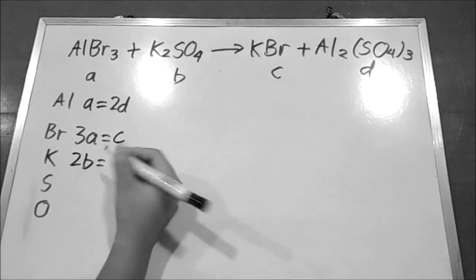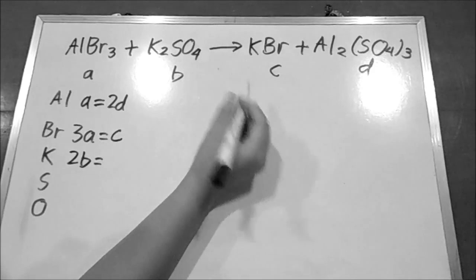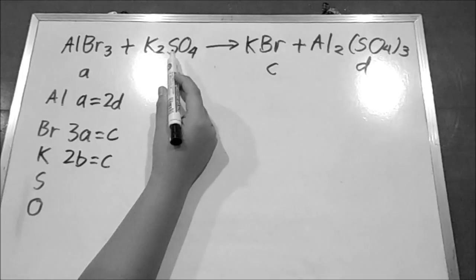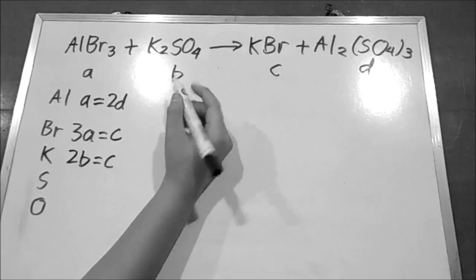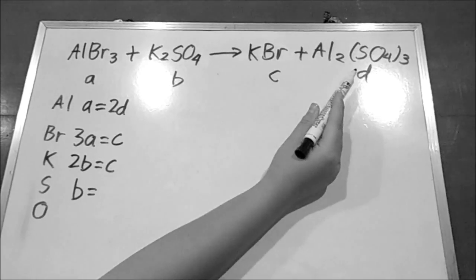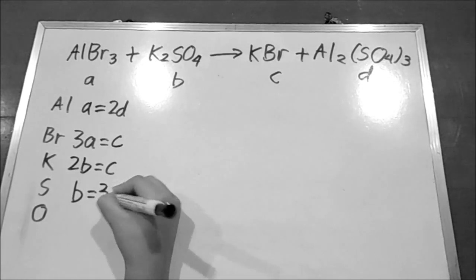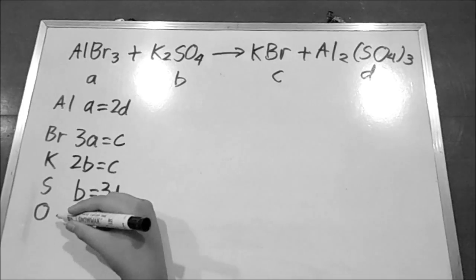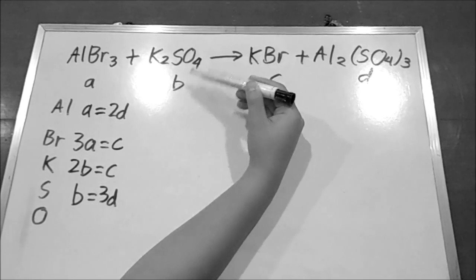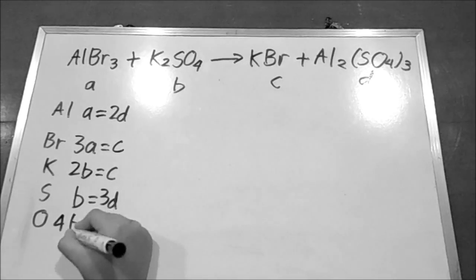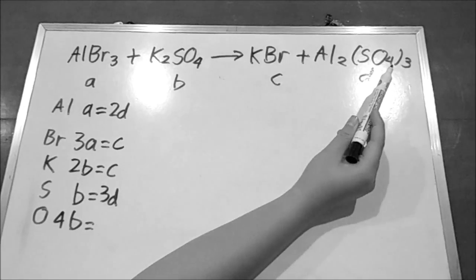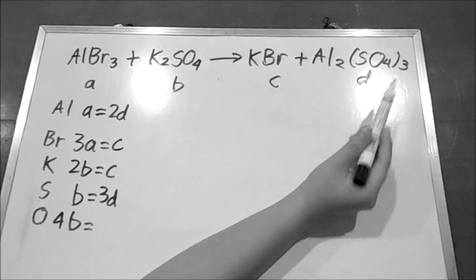And in D there is only one potassium, so we write down 3D. In B there is only one sulfur, so we write down B. And in D there are three sulfur, so we write down 3D. And for oxygen, we write down 4B. And in D there are 12 oxygen, so we write down 12D.